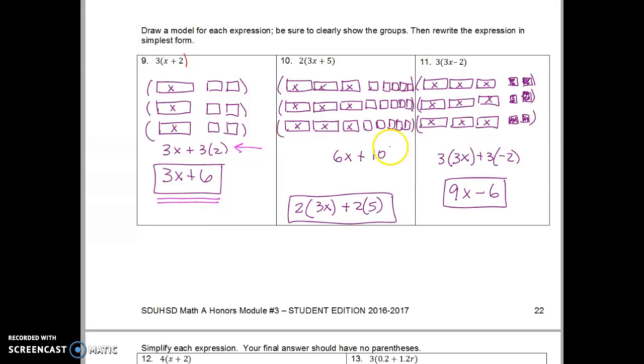In number 10, my answer is 6x plus 10. But look at this line. Two groups of 3x and two groups of 5. For number 11, my answer is 9x minus 6. But again, look at this line. Three groups of 3x and three groups of negative 2. That's the pattern that I'm asking you to notice so that you can do these without models.